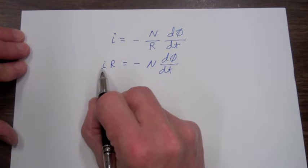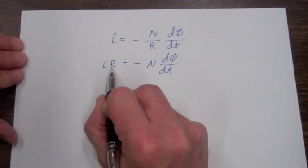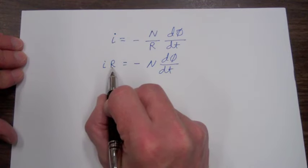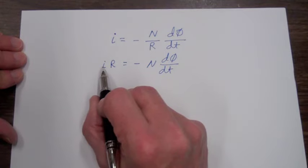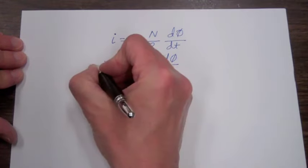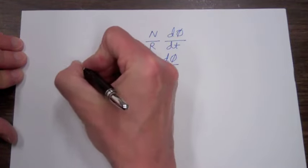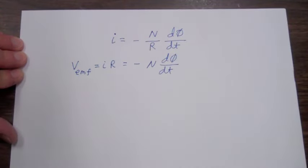So I is the current flowing in our circuit. R is the total resistance of our circuit. So I times R is the total voltage around our circuit, which we will call the electromotive force, V sub emf.